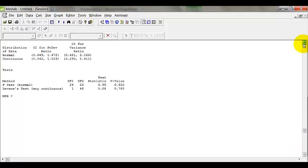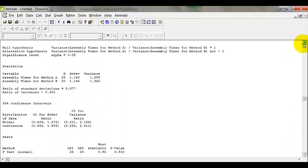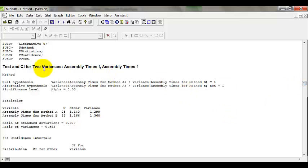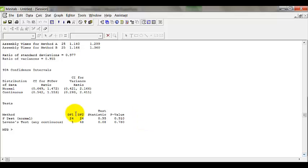So what you have here is the null hypothesis, which you know to be the variance of method A over variance of method B is equal to 1 versus alternative hypothesis, which is not equal to 1, at alpha 5%. So what could be useful to you now is that we will look at F-test. So the test statistic is 0.95 and the p-value is 0.91.